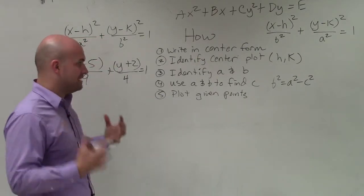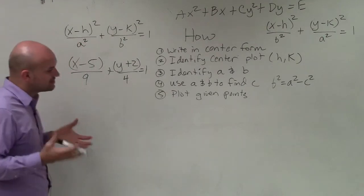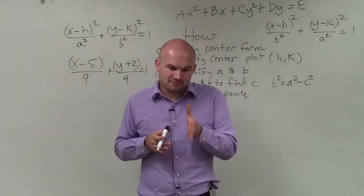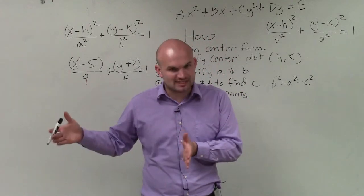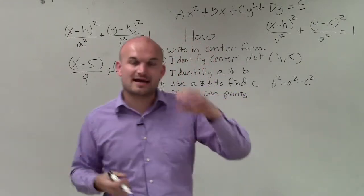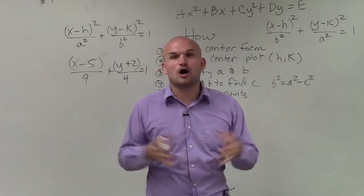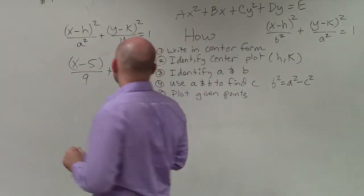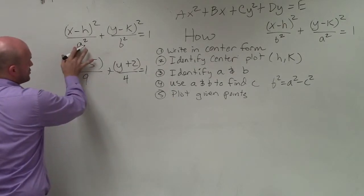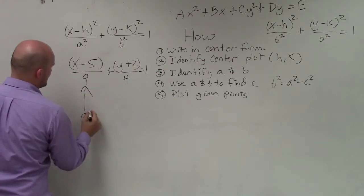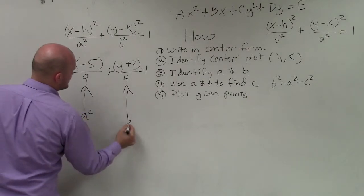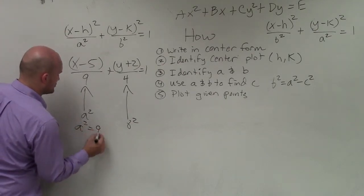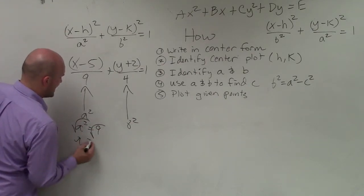The next thing is we want to identify a and b. Now, when we're dealing with an ellipse, a is always going to be larger than b. Remember, a represents the distance from the center to your vertices. And when we're dealing with the ellipse, we have a major axis and a minor axis. The vertices and the foci all lay on the major axis, which is longer than the minor axis where the two co-vertices lie on. So if you notice here, my major axis is horizontal because my larger value is going to be a squared, and my smaller value is going to be our b squared. So we look at these two values and we say, all right, a squared is equal to 9. So therefore, a is equal to 3.